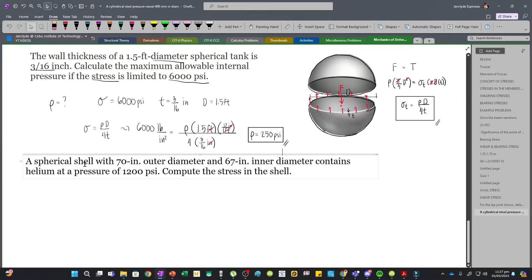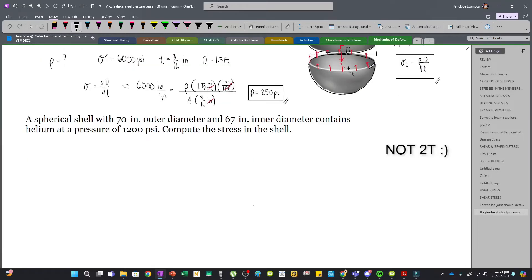Now for our next problem, this is actually the item in our exam which most students failed to answer. Some students got the thickness wrong while others used 2T instead of 4T. In spherical vessels, this is our only stress because we don't have a longitudinal axis, so we only have a circumferential or tangential stress. The formula is PD over 4T.